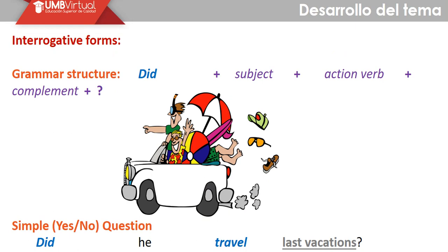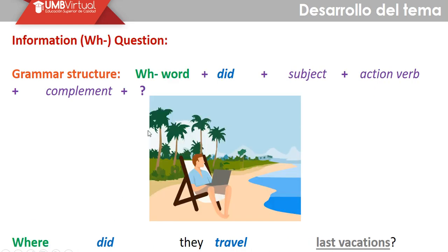Now let's continue with interrogative questions. The grammar structure is: Did + subject + verb in infinitive + complement + question mark. 'Did he travel last vacation?' As you can see, we have 'did,' the subject, the verb, and complement. Or we can add a WH question word at the very beginning. WH words are used to ask for specific information. 'Where did he travel last vacation?' — this person is asking about the place.